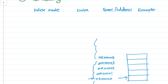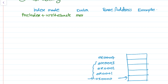It depends on how we are referring to the indexing mode. With pre-index plus write back, the data will be accessed from the memory pointed by the base register plus offset.